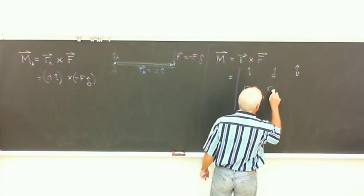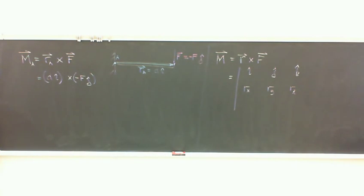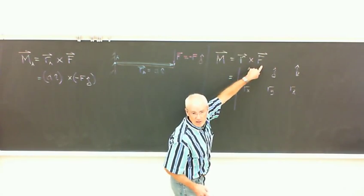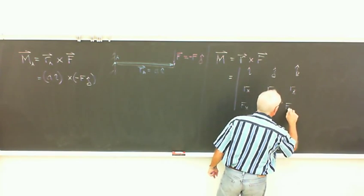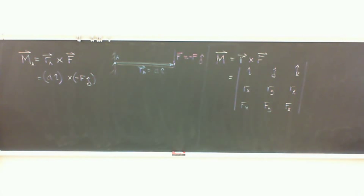Now let's apply it to our simple example where we already know the answer is F·D. Setting up the matrix: the middle row is the position vector r_A = D·i, so it's (D, 0, 0). The bottom row is the force vector F = -F·j, so it's (0, -F, 0). For the i component: zero times zero minus zero times zero equals zero. For the j component (remember the minus sign): D times zero minus zero times something equals zero too.